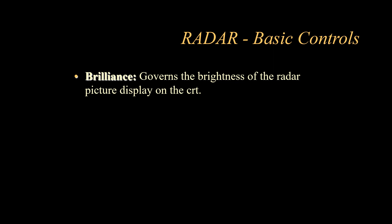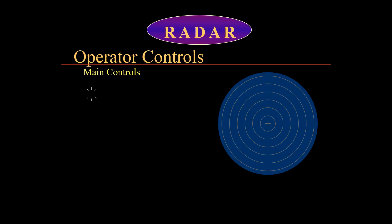The first control is the brilliance switch, which is used to govern the brightness of the radar picture on the CRT — the cathode ray tube, which is the screen of the radar. The brilliance control is used as per the operator's preference: you can adjust it whether you want it bright or not so bright. Each operator has their own preference.